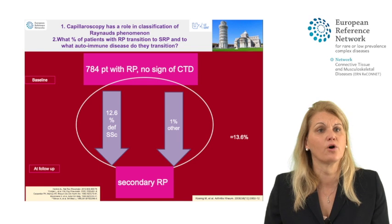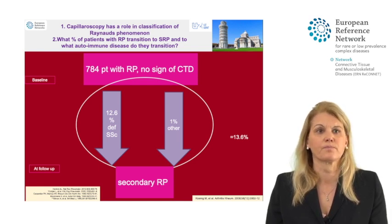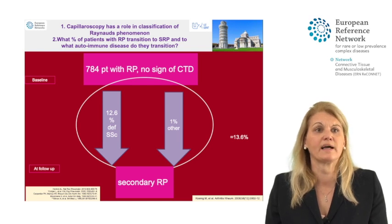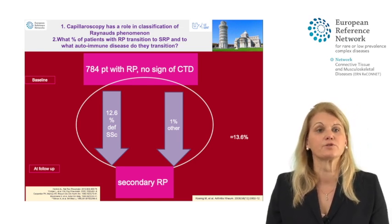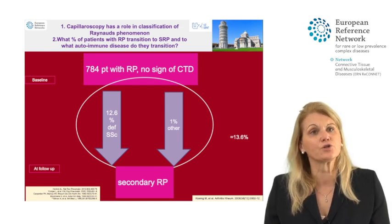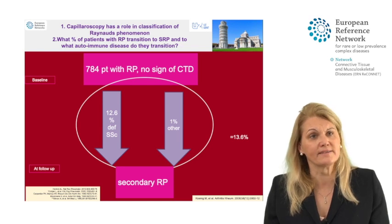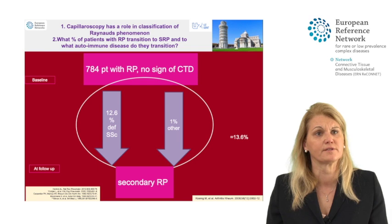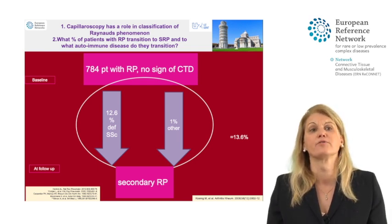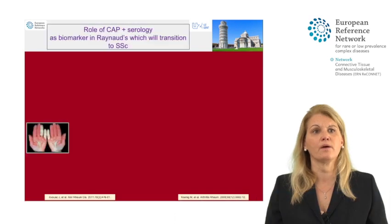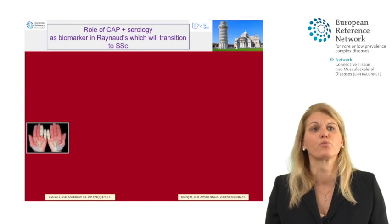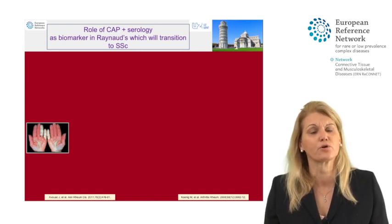More specifically, 12.6% will develop systemic sclerosis. In a patient population with Raynaud's phenomenon at baseline but no sign of any connective tissue disease, 12.6% will develop systemic sclerosis over time, and only 1% will develop other connective tissue diseases such as lupus. The landmark study of Koenig shows that the combination of capillaroscopy and detection of systemic sclerosis-specific antibodies can help us to discern, already at the baseline visit, which patient has a high chance to develop systemic sclerosis over time and which patient is quite safe. Specifically, this algorithm has high performance characteristics to predict who will and will not get systemic sclerosis.